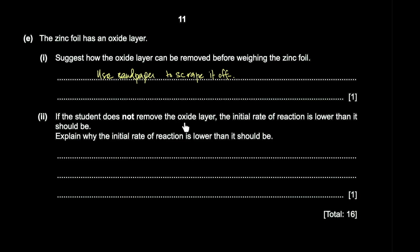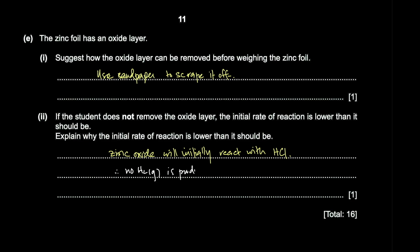If the oxide layer is not removed, the initial rate of reaction will be lower than expected. This is because zinc oxide will initially react with the HCl instead of zinc, meaning no hydrogen gas is produced at first. Since rate is measured by volume of gas collected per unit time, less gas is produced initially, and the total time taken to collect 20 cm³ will be longer, giving a lower apparent initial rate.